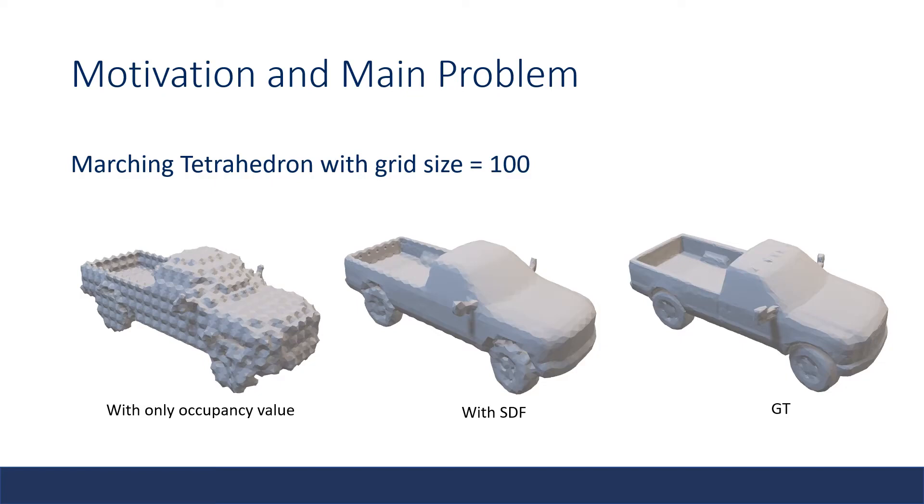However, if we have the ground truth sign distance value, we can place faces by interpolating the distance, and the result is much closer to the ground truth, while we query the same number of points.